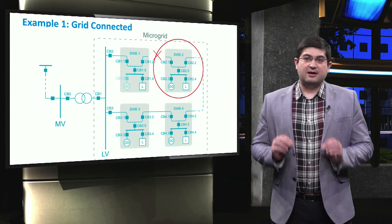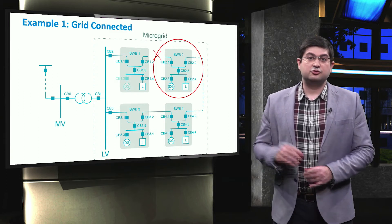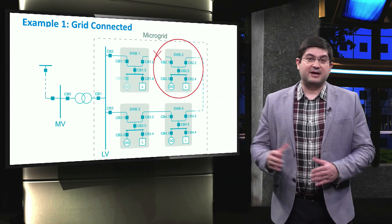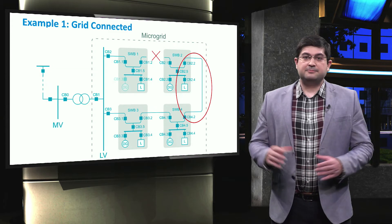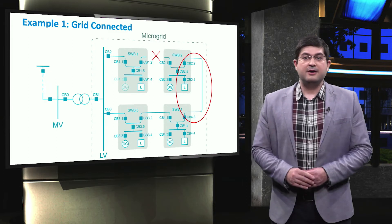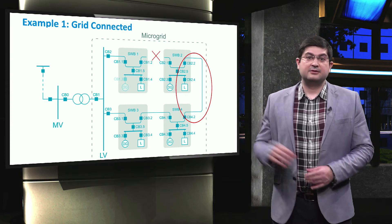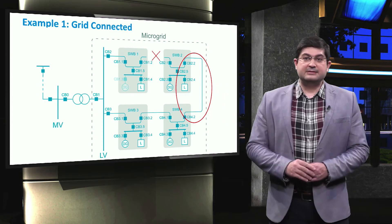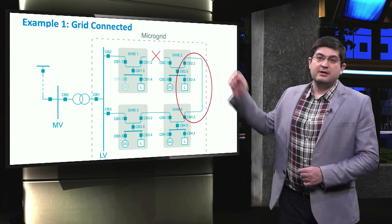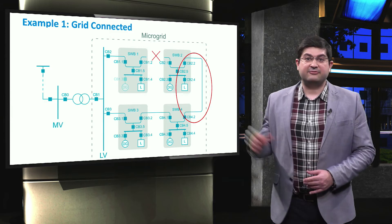To increase the reliability and reduce the time period of the disconnection of switchboard 2, it can then be connected to the grid through another path. Circuit breakers 2.2 and 4.2 are closed, and therefore switchboard 2 is connected to switchboard 4. This ensures that switchboard 2 will have supply of electricity as soon as possible after the fault.